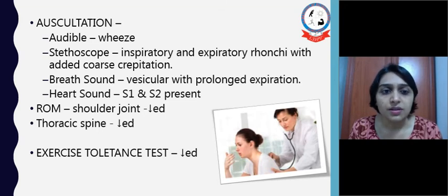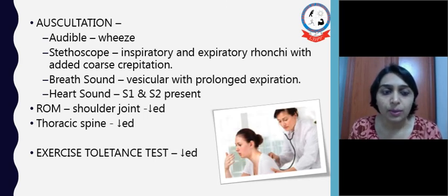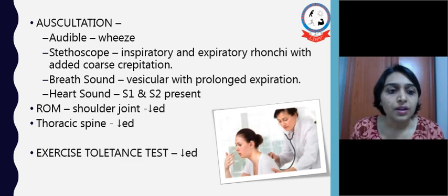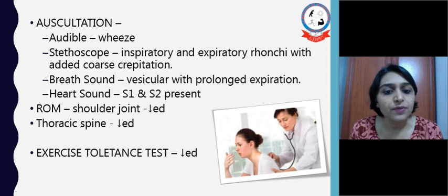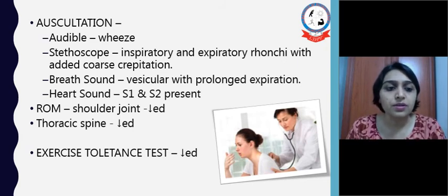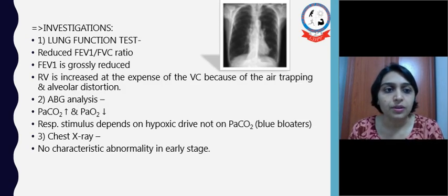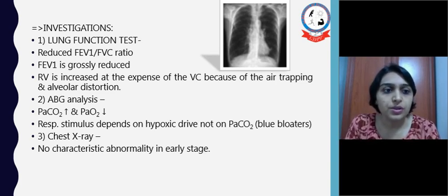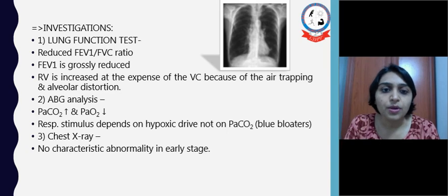On auscultation, audible wheeze can be found. With the stethoscope, we may hear inspiratory and expiratory rhonchi with added coarse crepitations. Breath sounds are usually vesicular with prolonged expiration. Heart sounds S1 and S2 are normally present. Range of motion of the shoulder joint and thoracic spine is usually reduced due to stiffness of the accessory muscles. Exercise tolerance is also reduced. On lung function testing, we may find a reduced FEV1/FVC ratio; FEV1 is grossly reduced. Residual volume is increased because of air trapping, at the expense of vital capacity.